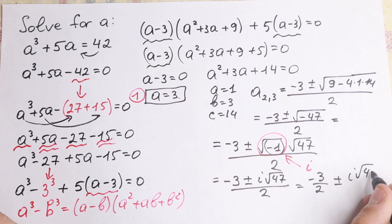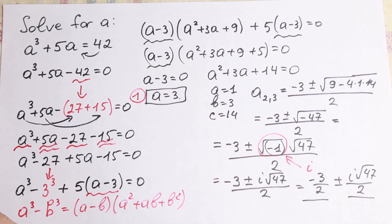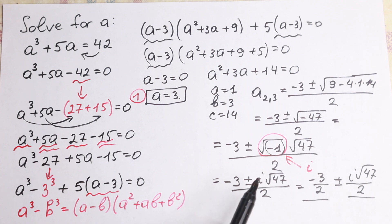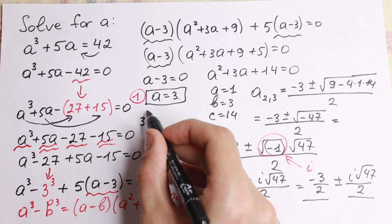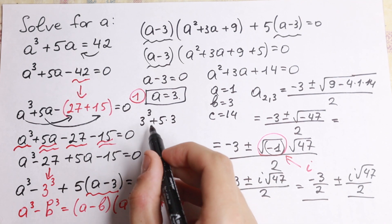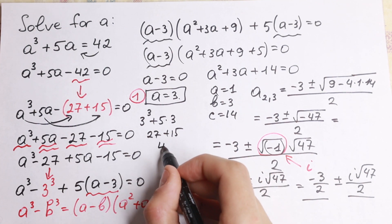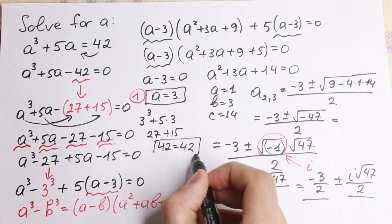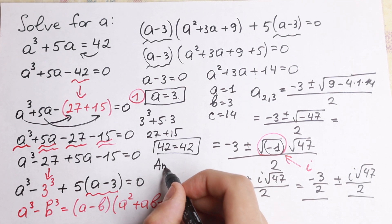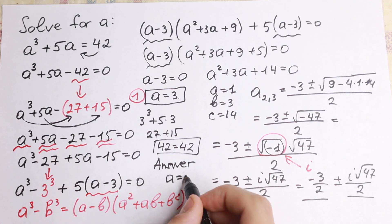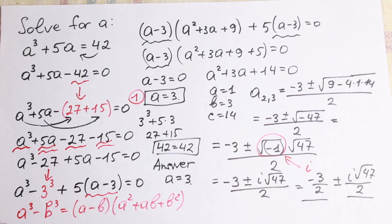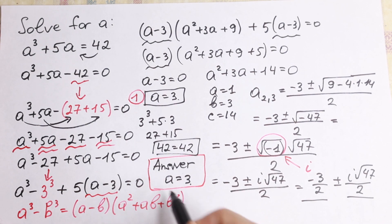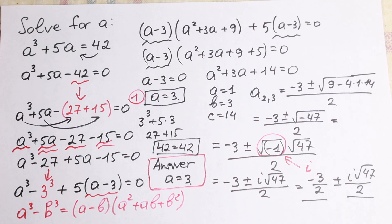This is the real part and this is the imaginary part. We have two complex roots and one real root. We can verify: 3 cubed plus 5 times 3 equals 27 plus 15, which equals 42. So our final answer is a equals 3. If you have any questions, write them in the comments. Subscribe if you enjoyed it — see you in the next video!